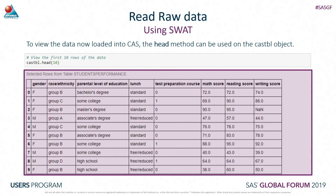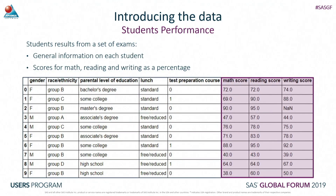If I would like to view this data, it's as simple as running a head method on the data set - I can see the first ten observations. The data set is called student's performance. It contains general information about a number of students going through three main exams. The information includes gender, race and ethnicity, and other categorical data, plus scores for three exams: a math score, reading score, and writing score. These values are percentages, so we're expecting them to be out of a hundred.